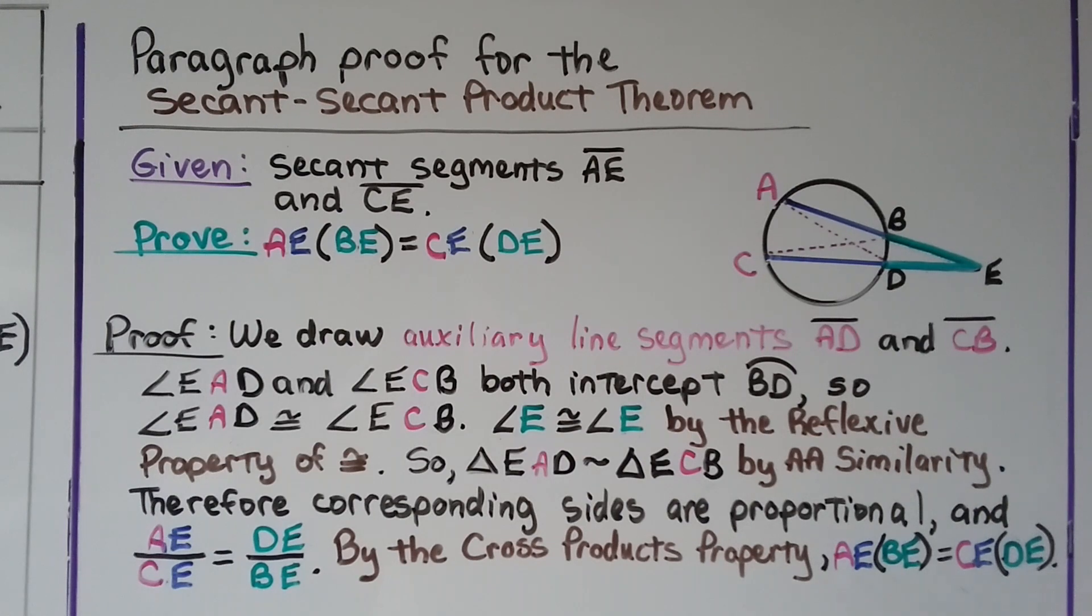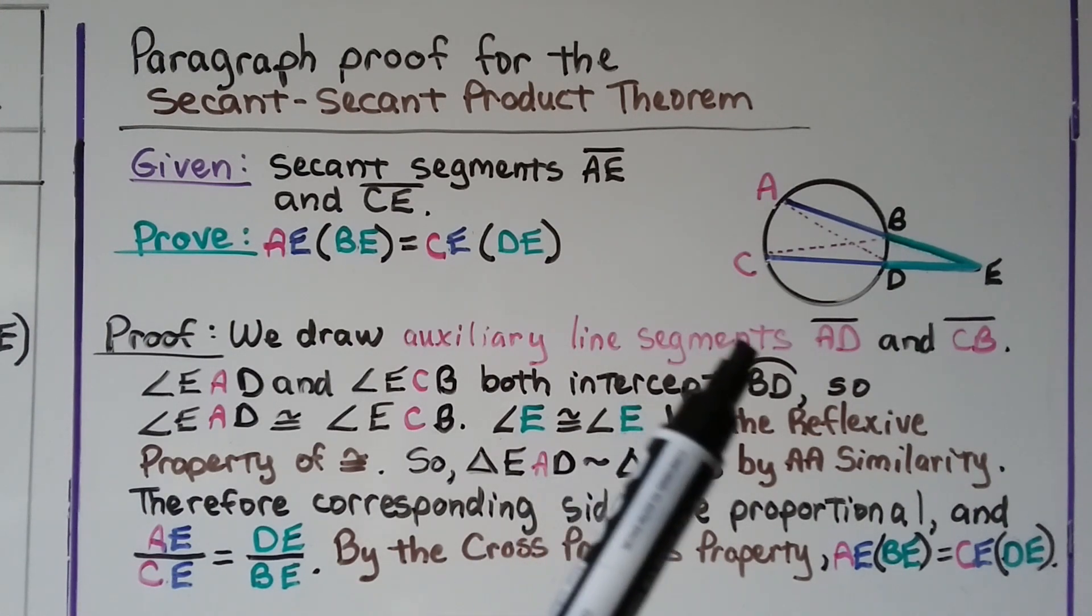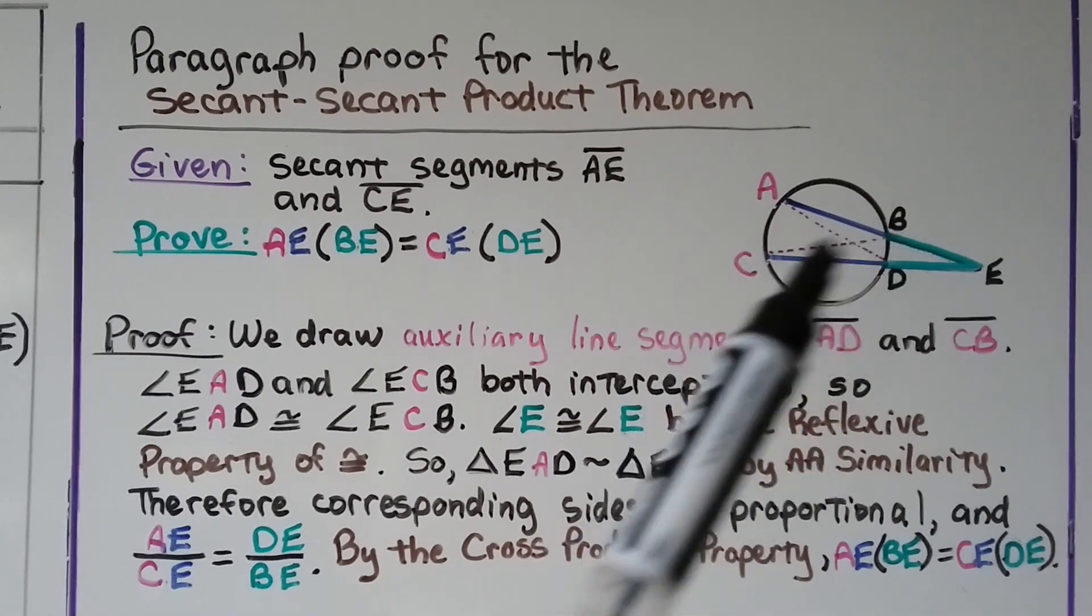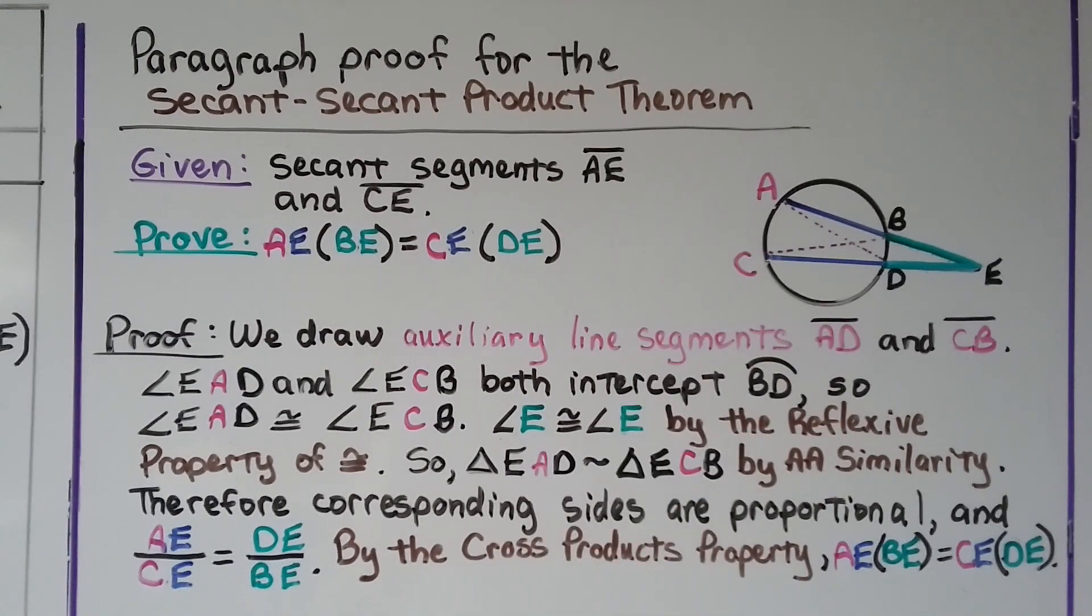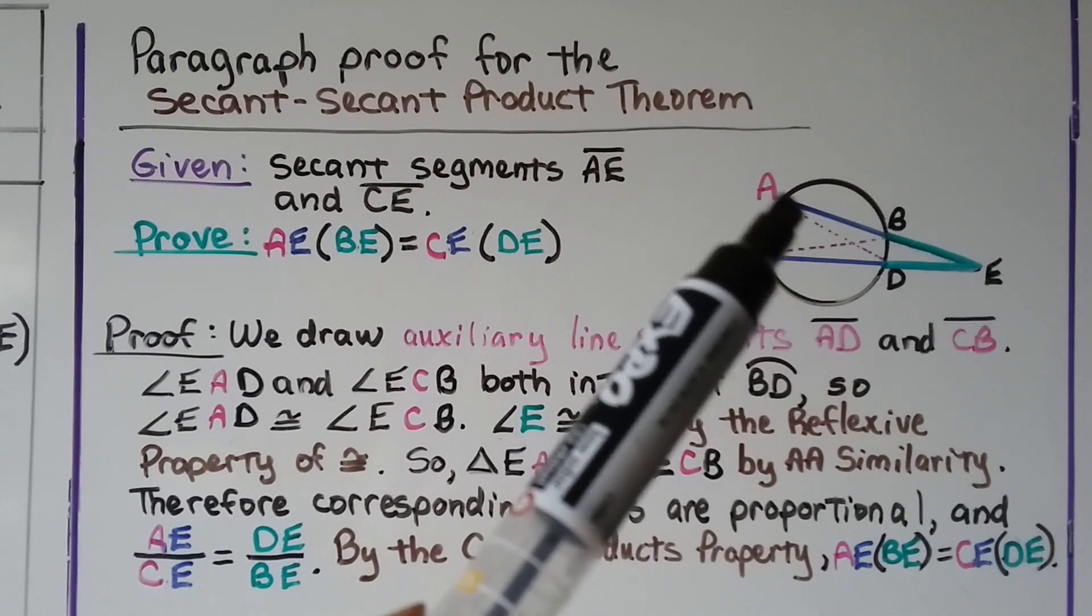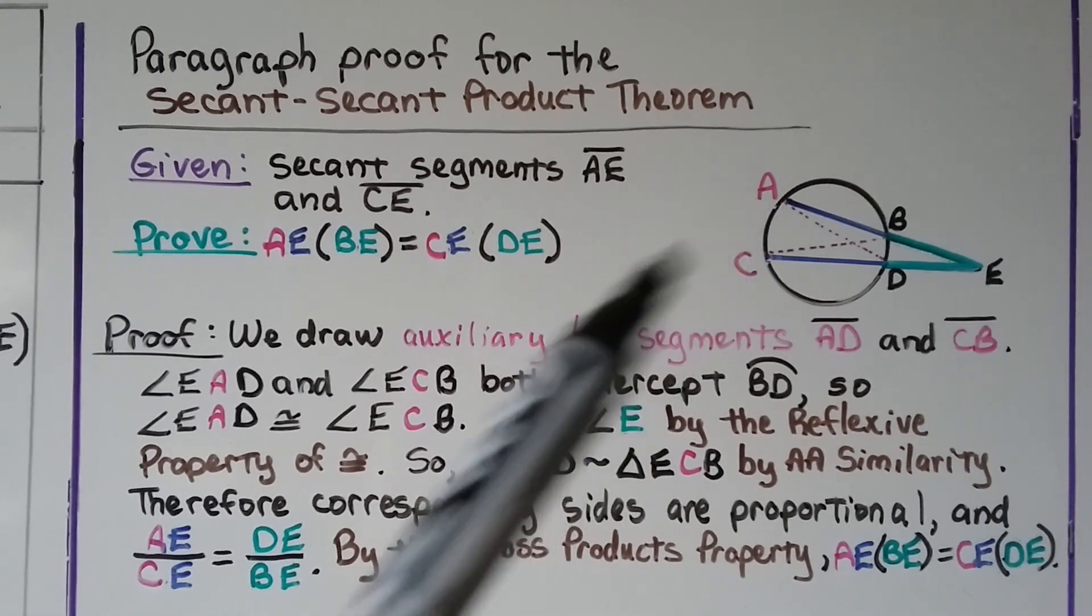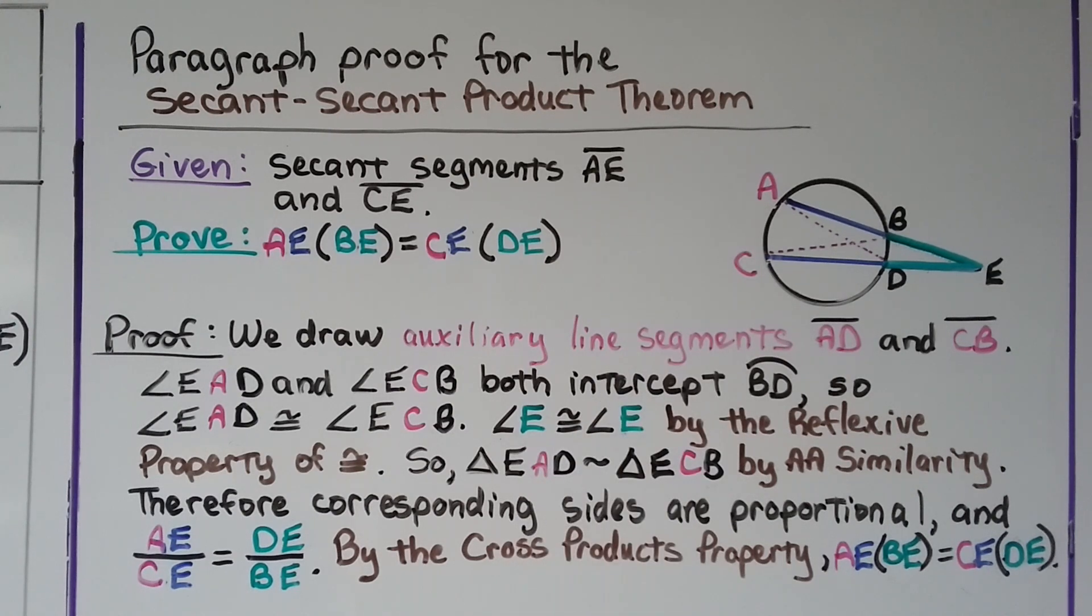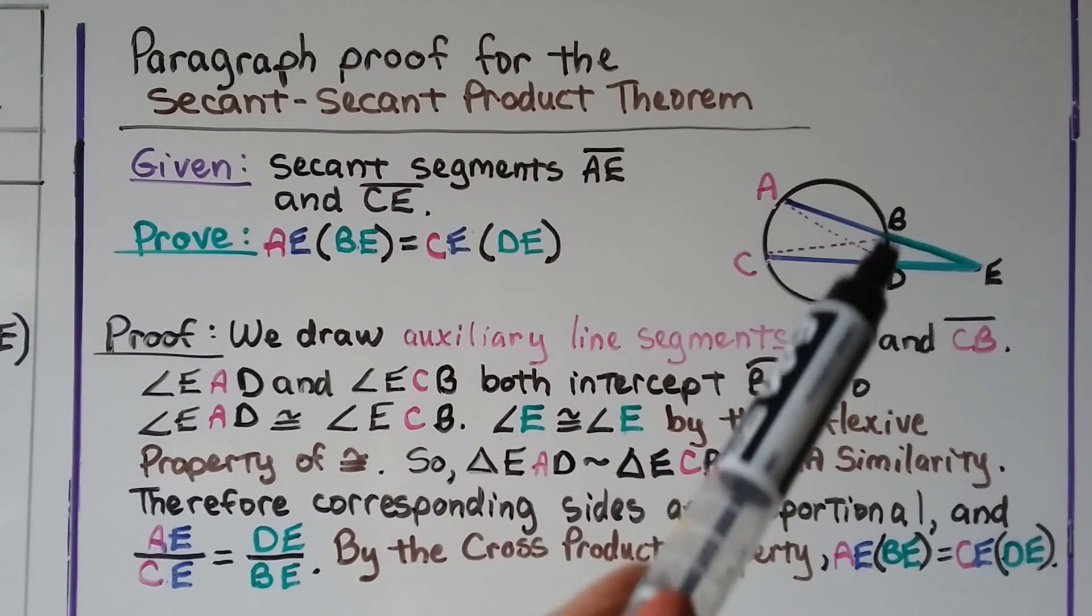For our proof, we draw auxiliary line segments AD, this one right here, and CB, this one right here. Angle EAD, this one right here with vertex A, and ECB, this one right here with vertex C, both intercept arc BD, right here.